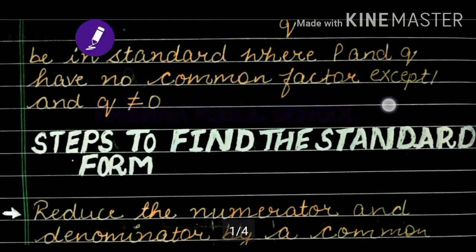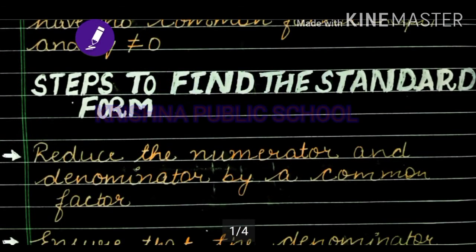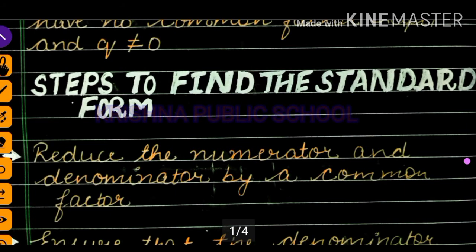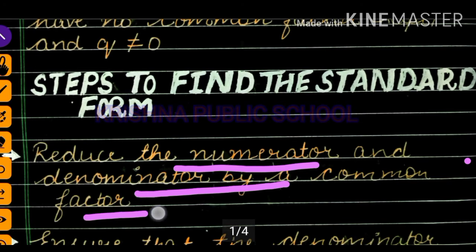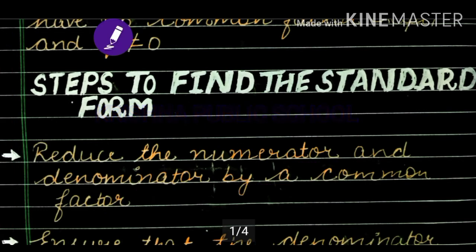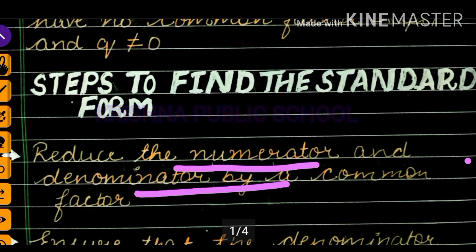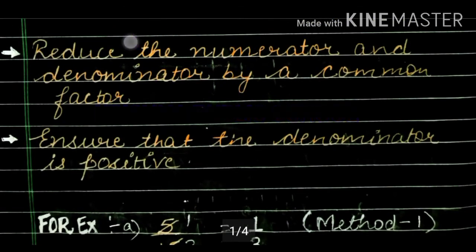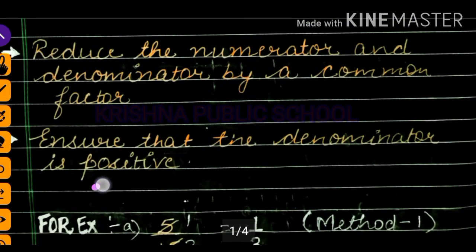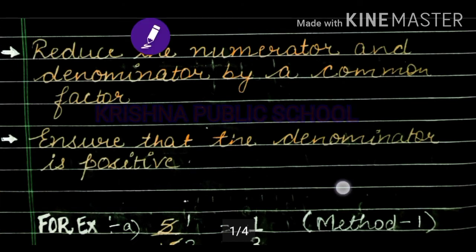These are the steps to find out the standard form. We mainly follow two steps. First, reduce the numerator and denominator by a common factor. Second, ensure that the denominator is positive — the denominator is always positive.